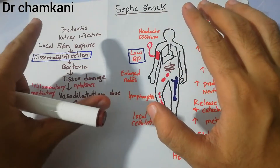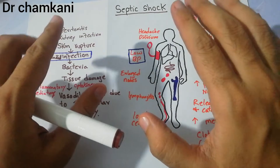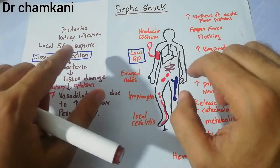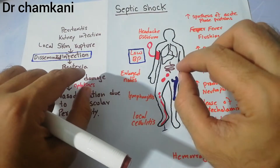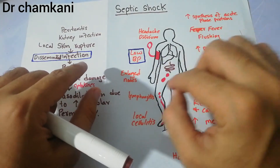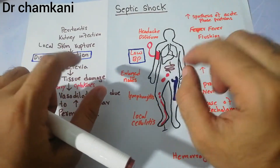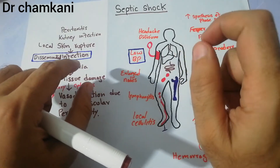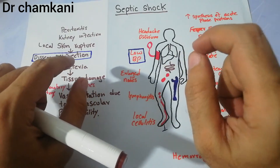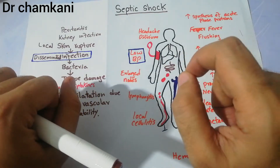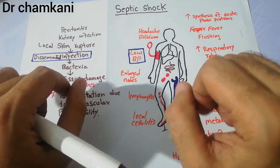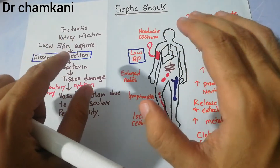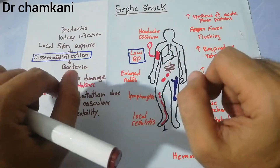Septic shock is basically a widespread infection in the body in which the infection is borne through the blood, spreads to different tissues of the body, and then releases different mediators which cause a lot of features.